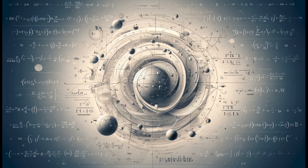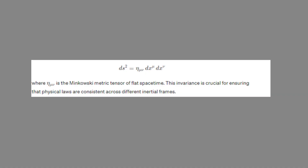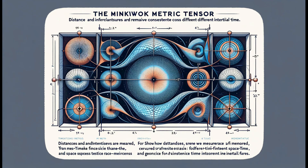This invariance is expressed by the equation in the figure. The Minkowski metric tensor for flat spacetime is represented here. This tensor encodes the geometric properties of spacetime, providing a way to measure distances and intervals that remain consistent regardless of the observer's inertial frame.